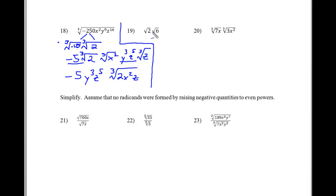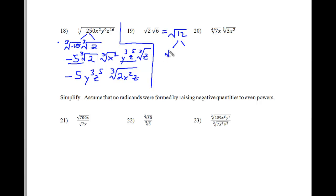Alright, so if we take a look at problems 19 and 20 — there's actually nothing you can do with them right now, because the square root of 2 is unsimplifiable and the square root of 6 is also unsimplifiable. So what we do is combine them: since they're under the same square root, we can multiply them together to get 12. Then we look at our root chart and notice that 12 is divisible by 4 and 3, and the square root of 4 is 2. So 2 square roots of 3 is our answer.